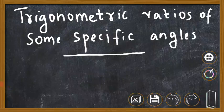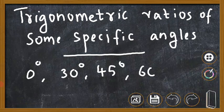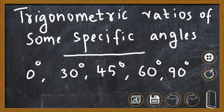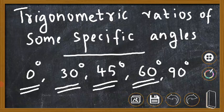What are the specific angles? The specific angles are 0 degree, 30 degree, 45 degree, 60 degree, and 90 degree. In this section we have to study the values of sin 0 degree, sin 30 degree, cos 45 degree, tan 60 degree, and so on — the trigonometric ratios of these specific angles.